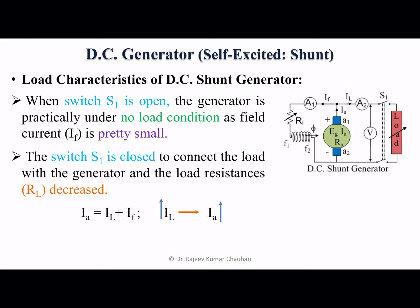This is a circuit diagram for the load test of the DC shunt machine or generator. Here the switch S1 is open, it means no load is connected with the generator. The generator is supplying only the field current and that is pretty small, so we can say the generator is practically under no load condition.